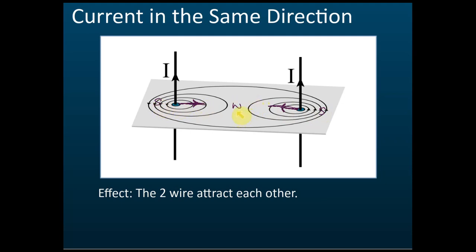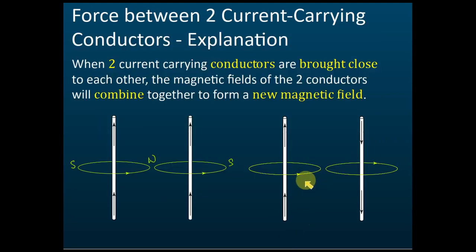Therefore, the stronger field pushes each conductor toward the weaker field — meaning the two wires try to get close to each other. We say the two wires attract each other. So when two current-carrying conductors are brought close together with currents in the same direction, the two wires will attract each other.